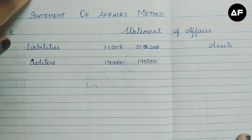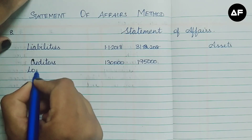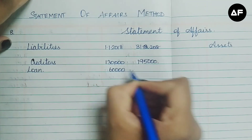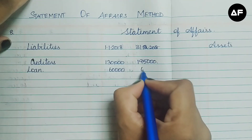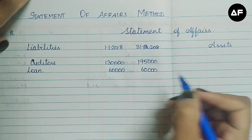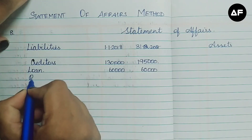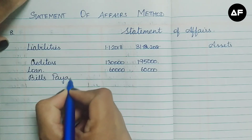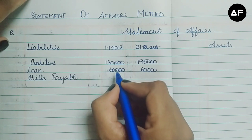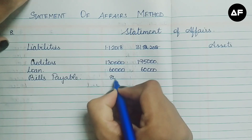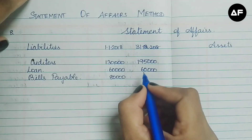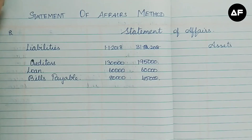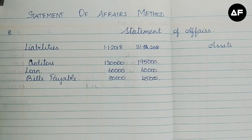Next is the bank loan: 60,000 for 1-1-2018 and the same 60,000 for 31-12-2018 — there's no change in the bank loan. The last item on the liabilities side is bills payable: 80,000 for 1-1-2018 and 45,000 for 31-12-2018. That is the end of the liabilities side.